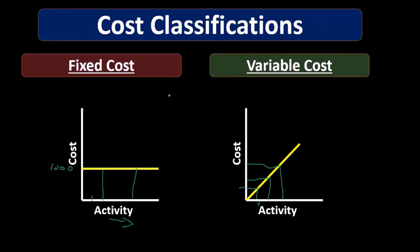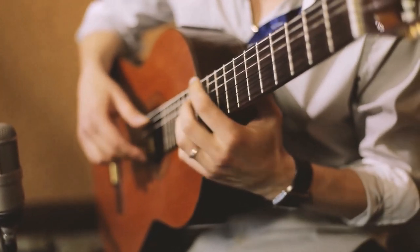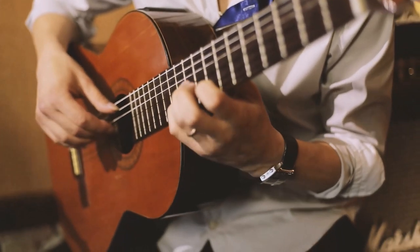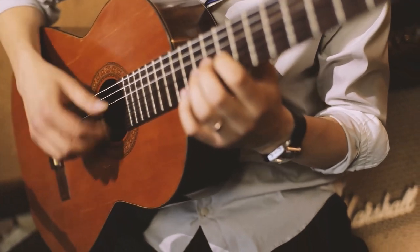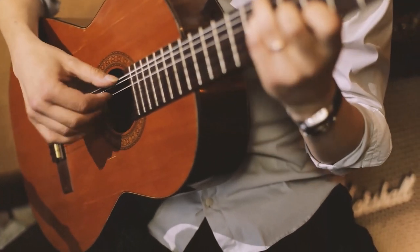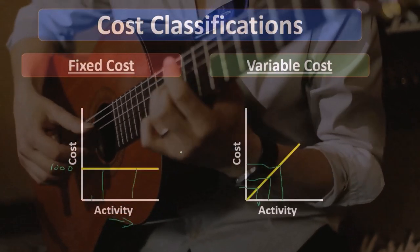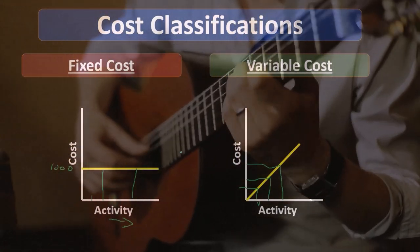Some costs line up into these two categories very easily — wood in a guitar is pretty straightforward, and rent is pretty straightforward. But we're going to have some costs that aren't quite as easy to place into these two components.